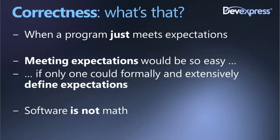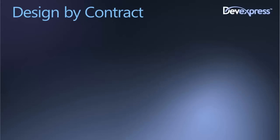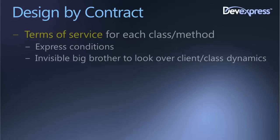Software is not like math. Software is not something to which theorems and abstract reasoning can be reliably and extensively applied. So in software, a lot is left to approximation, and our definition of correctness — when a program just meets expectations — has to be refined to: when a program sort of meets expectations. Design by contract is, in more formal terms, the closest we can get in software to the abstract idea of correctness.